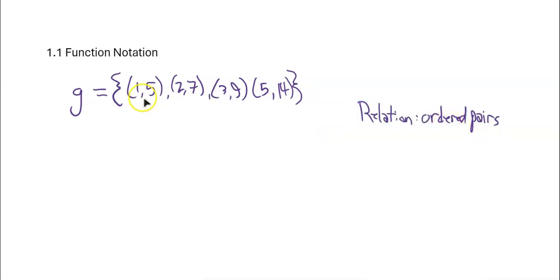And what ordered pairs do is they relate an input to an output, like 1 to 5, 2 to 7. And this one you can kind of see a little bit of a pattern. There doesn't have to be a pattern, there doesn't have to be anything like that, there can be, but it can just be seemingly random, it can actually be random as well.